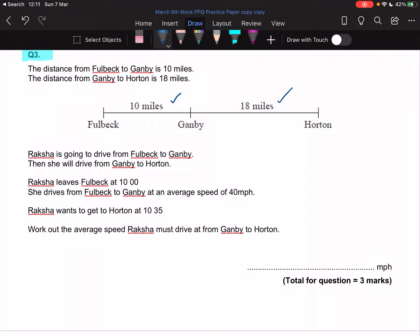Raksha is going to drive from Fulbeck to Gamby first, then she will drive from Gamby to Horton. She leaves Fulbeck at 10:00 AM and drives from Fulbeck to Gamby at an average speed of 40 miles per hour.